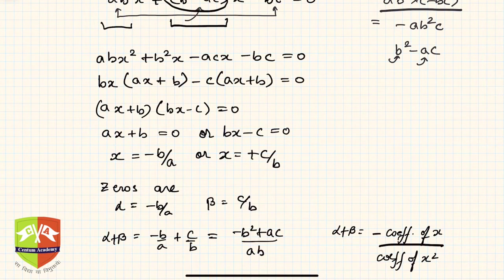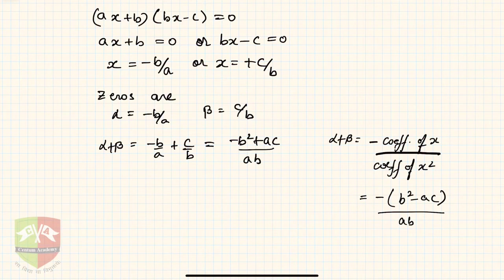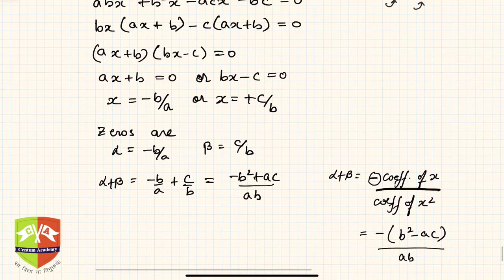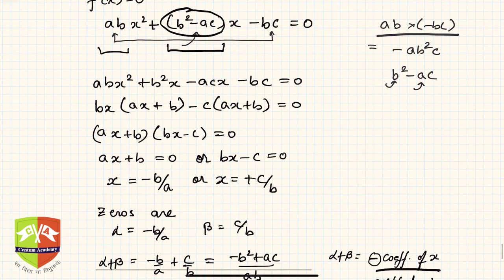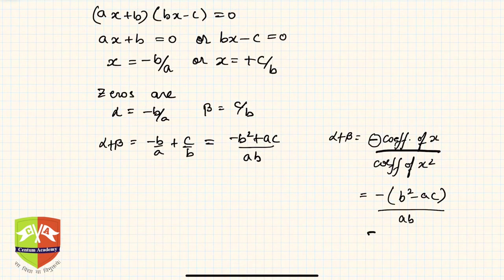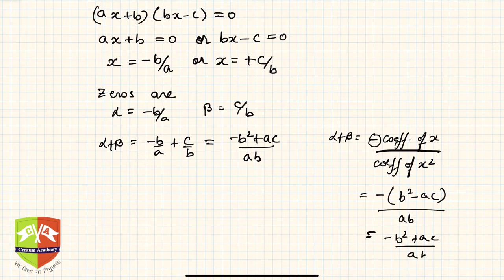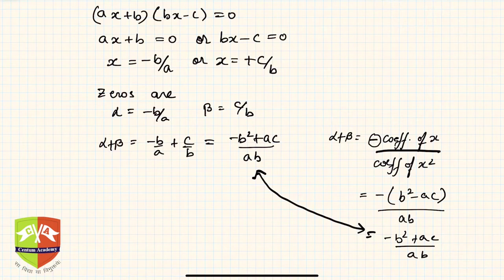So the sum of roots from the formula is -(b² - ac) / ab = (-b² + ac) / ab, which matches what we computed directly. Both the actual sum α + β and the formula give the same result, so the sum of roots is verified.